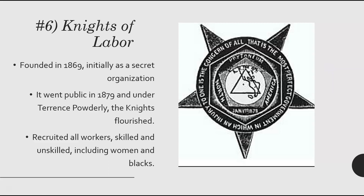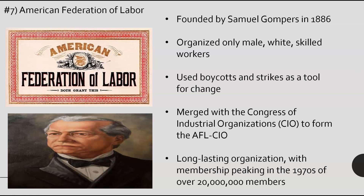One example of these labor organizations is the Knights of Labor, founded in 1869. Initially it was secret, then went public about ten years later under the leadership of Terrence Powderly, and the Knights flourished, recruiting many members. They were very egalitarian for the time — all workers were welcome: skilled, unskilled, women, and Black people. The American Federation of Labor was a counterpoint: workers who were only male, white, and skilled, founded by Samuel Gompers. They used boycotts and strikes as tools for change, eventually merging with the CIO to form the AFL-CIO, hitting its peak in the 1970s with over 20 million members.